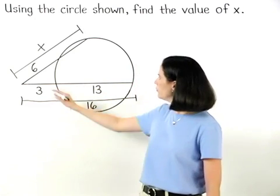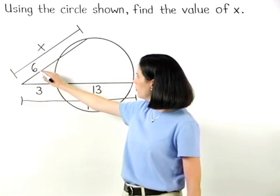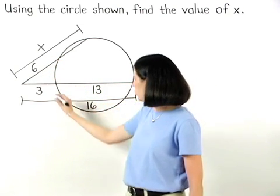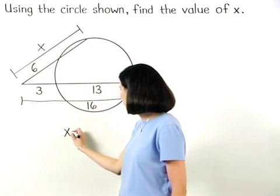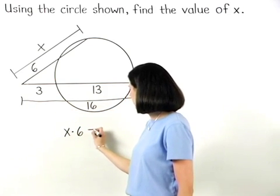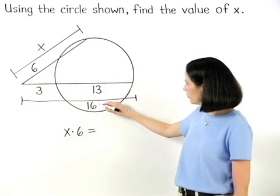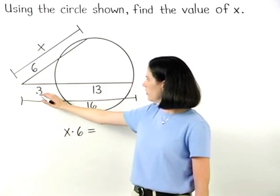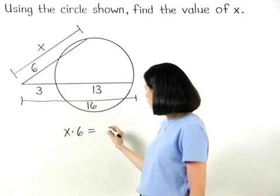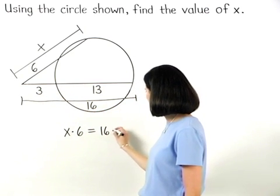So we have one full secant segment times its external segment, or x times 6, is equal to the other full secant segment times its external segment, or 16 times 3.